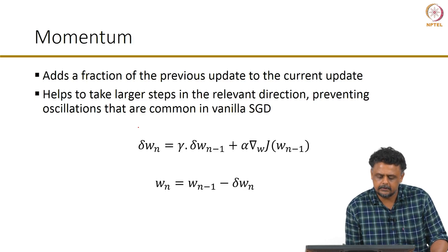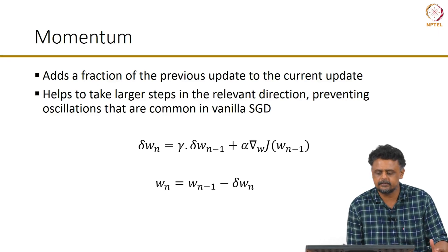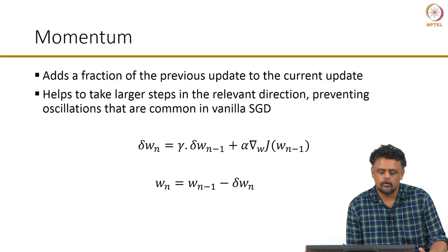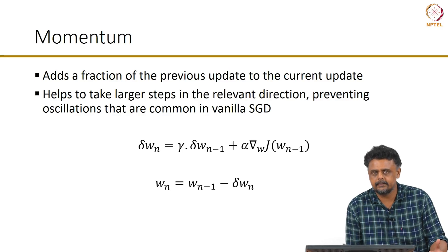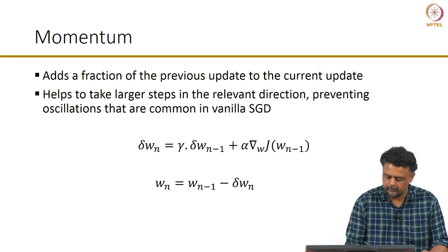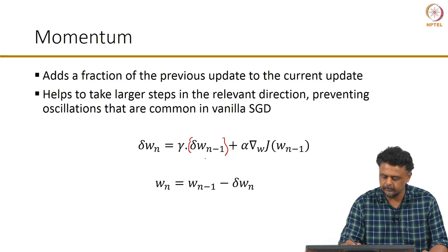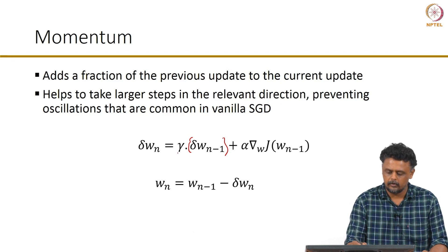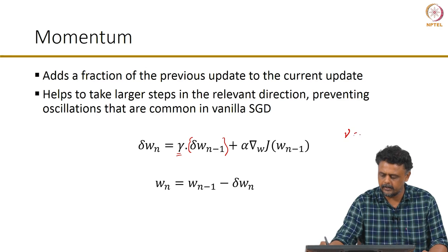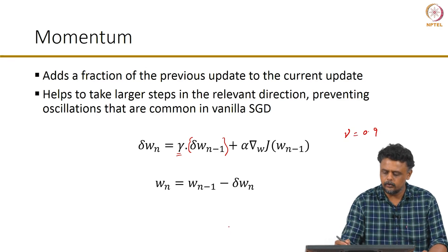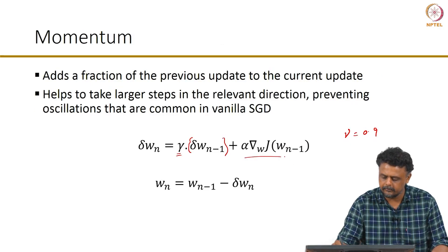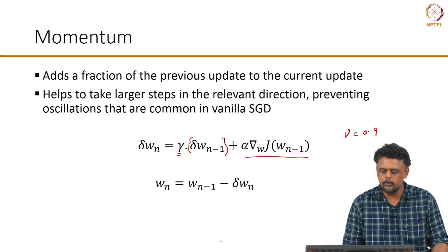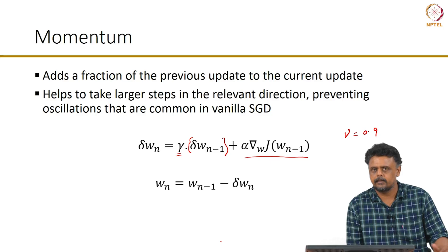What the momentum variant does is add a fraction of the previous update to the current update, which means you take a larger step in the relevant direction, thereby preventing oscillations and converging faster. The delta is the update, and this is the update from the previous step. You take a fraction of that update — gamma is typically around 0.9 — and add it to your current update, so that you take a bigger step in the relevant direction.